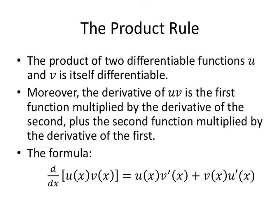So what is the product rule? The product of two differentiable functions u and v is itself differentiable. Moreover, the derivative of u times v is the first function multiplied by the derivative of the second, plus the second function multiplied by the derivative of the first. The derivative of a product is not the product of the derivatives. We leave u(x) alone and multiply it by the derivative of v, then add v(x) multiplied by the derivative of u. First times the derivative of the second, plus second times the derivative of the first.